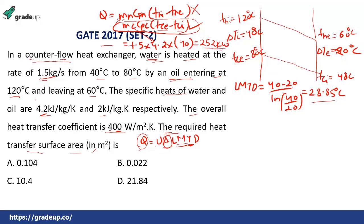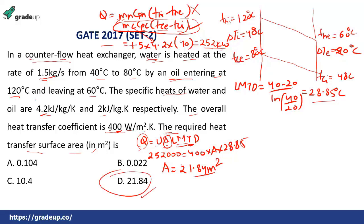Since U is in W/m²·K, convert Q: 252 kW = 252,000 W. Using Q = U × A × LMTD: 252,000 = 400 × A × 28.85. Solving, A = 21.84 m². Option D is the answer.